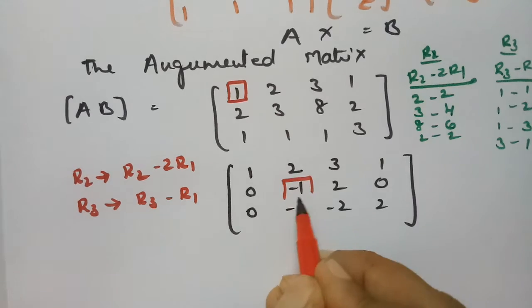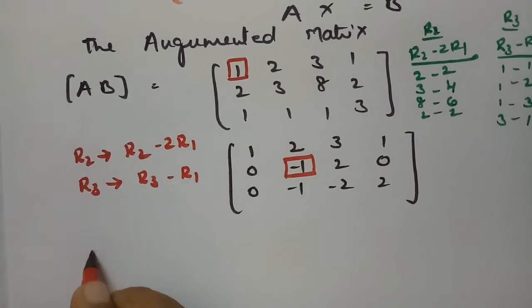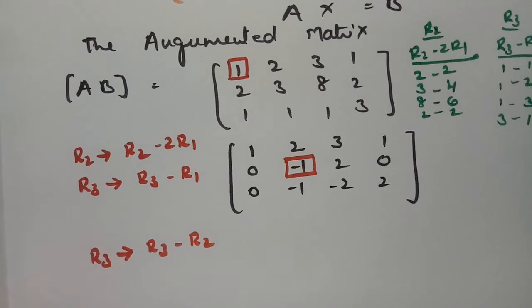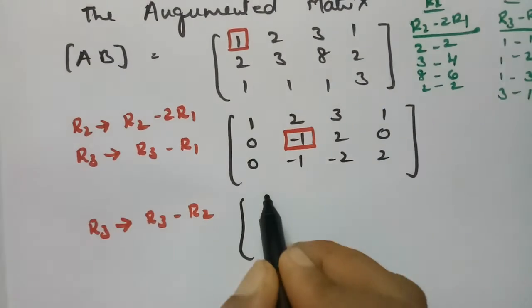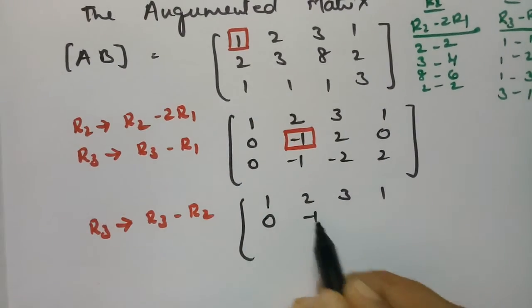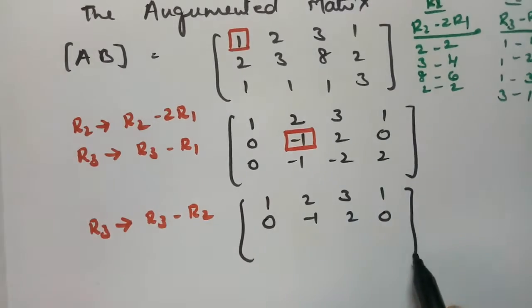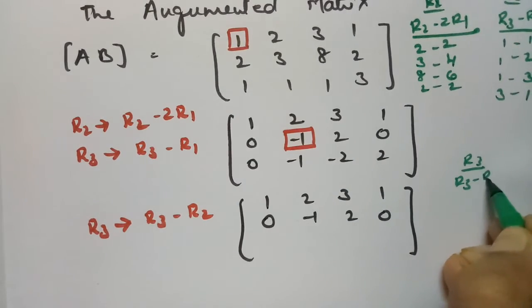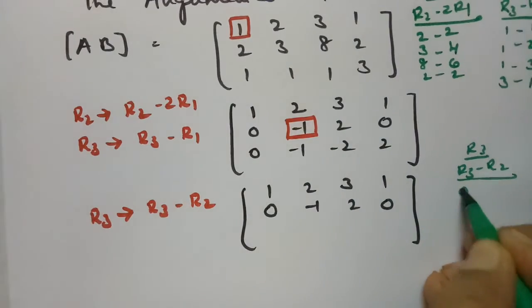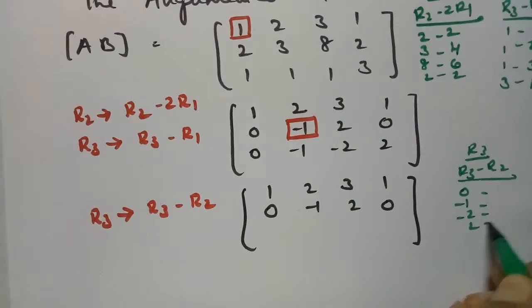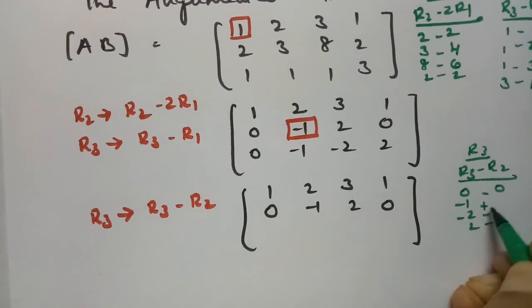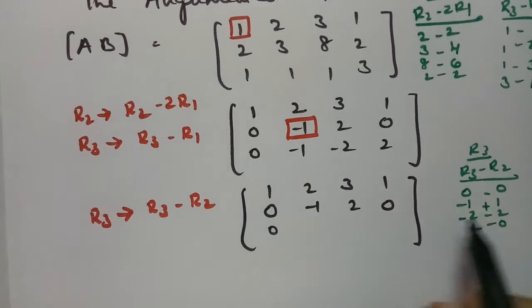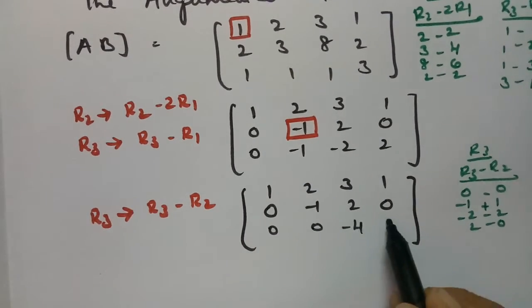R3 should become zero in that position, so the operation is R3 minus R2. R3 is 0, minus 1, minus 2, 2 and R2 is 0, minus 1, 2, 0. Subtracting: 0 minus 0 = 0, minus 1 minus minus 1 = 0, minus 2 minus 2 = minus 4, and 2 minus 0 = 2.